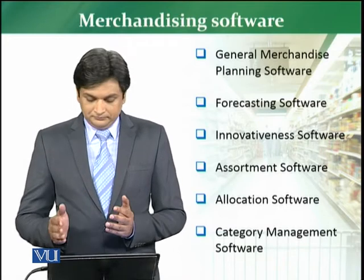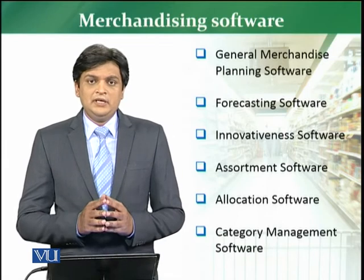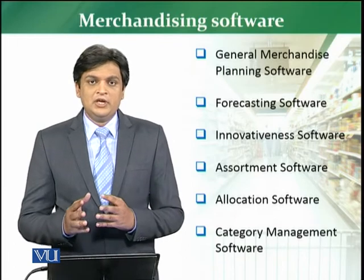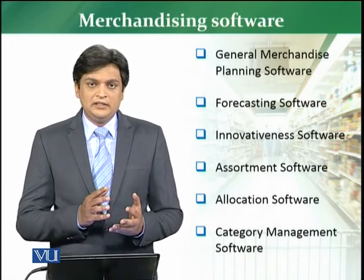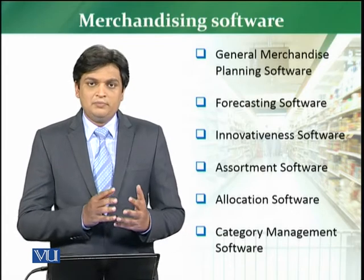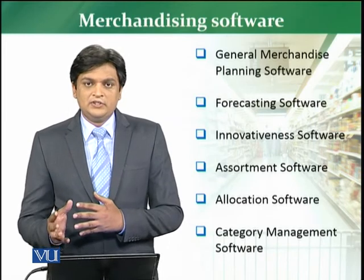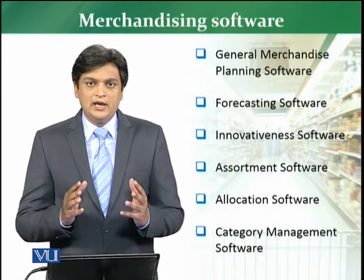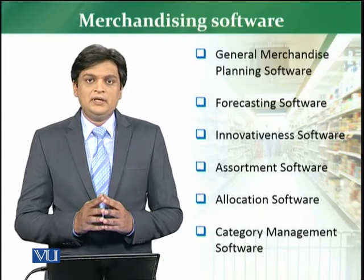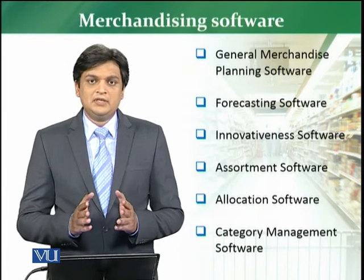Next we have assortment software. Normally a retail store has a set assortment — it can be food, non-food, different departments, then different categories, different brands within categories, different products within brands, and different sizes and colors within products. All these attributes are jointly planned in the assortment software.